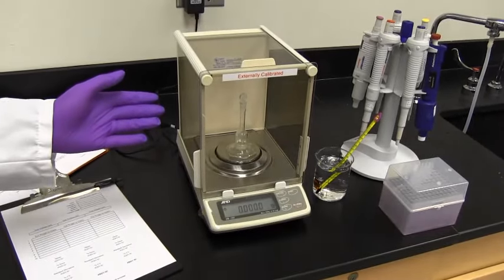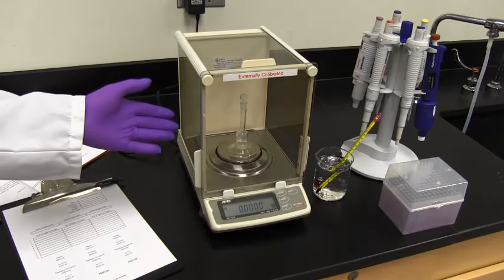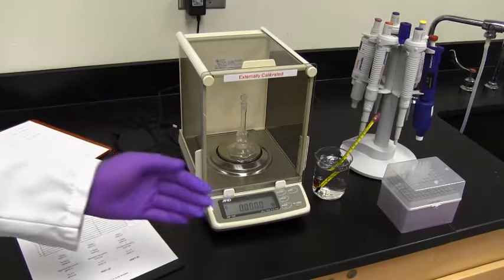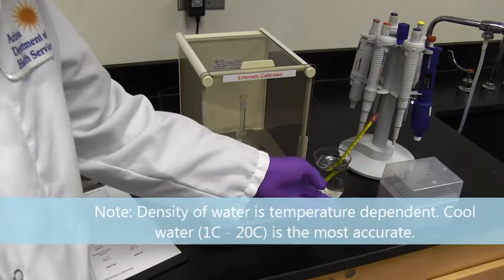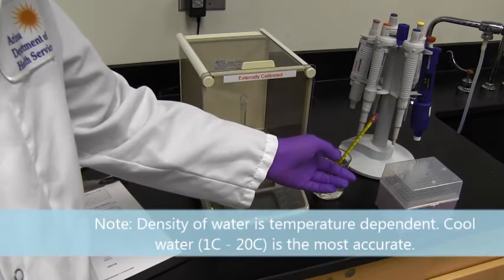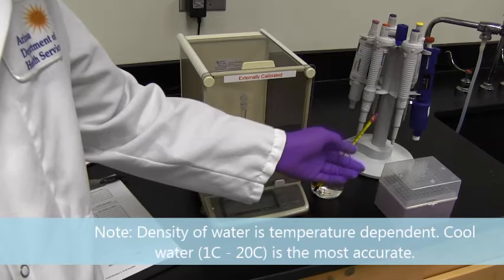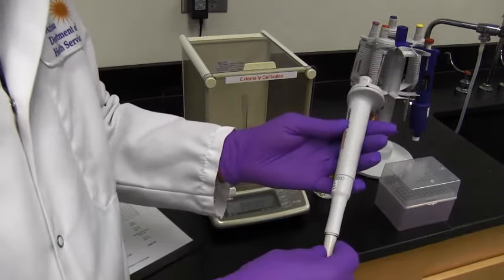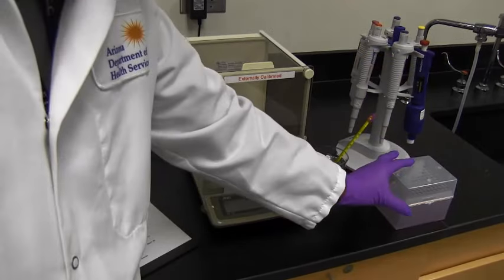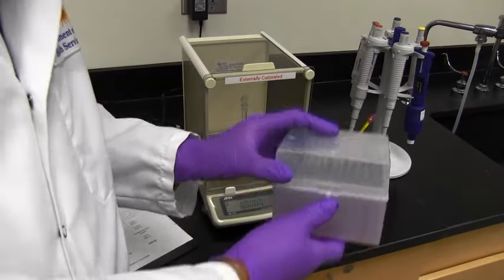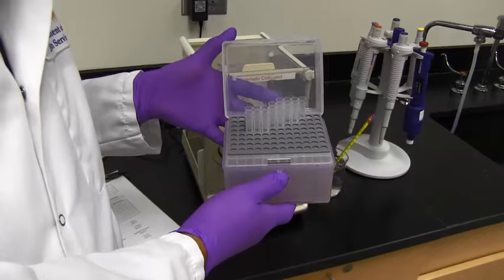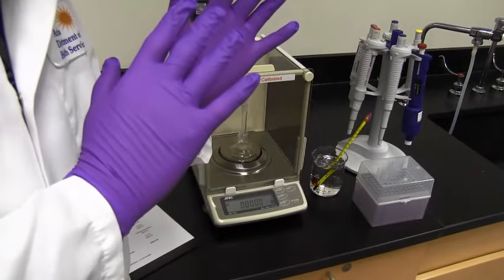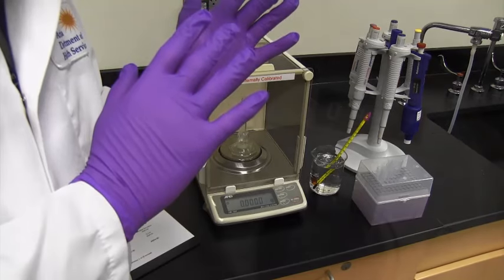You need an analytical balance. Our analytical balance has a volumetric flask inside of it. You also need a beaker with a NIST calibrated thermometer. You need the actual pipette itself. And then you need pipette tips. Lastly, you're going to need some gloves to handle all of this.